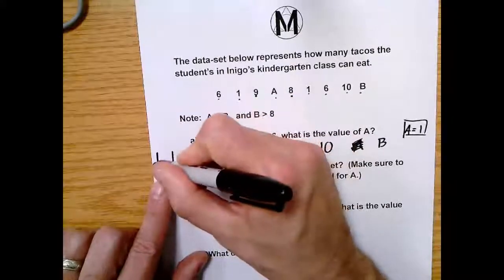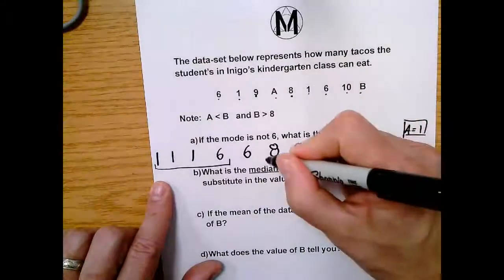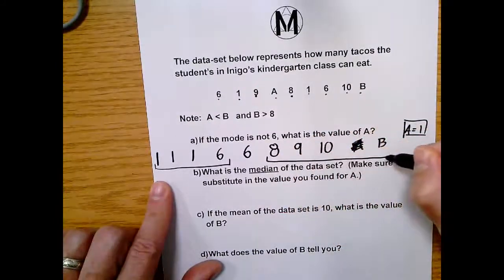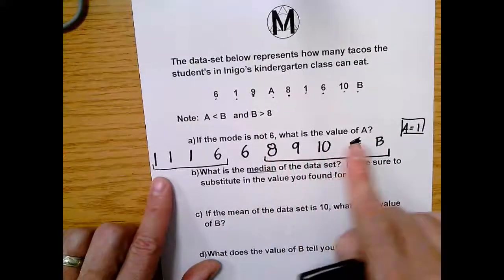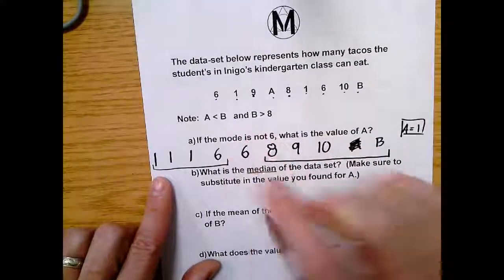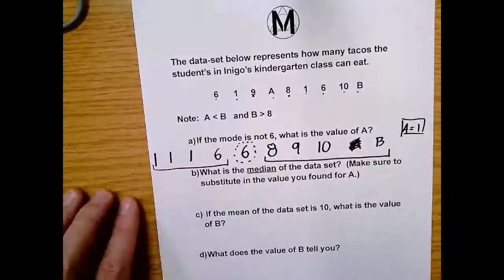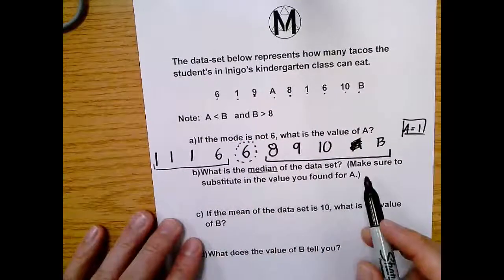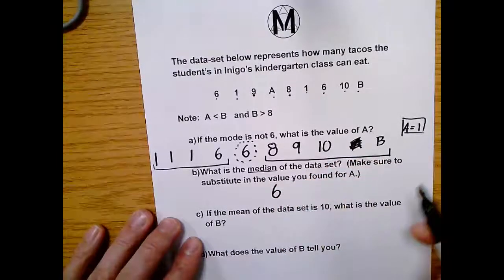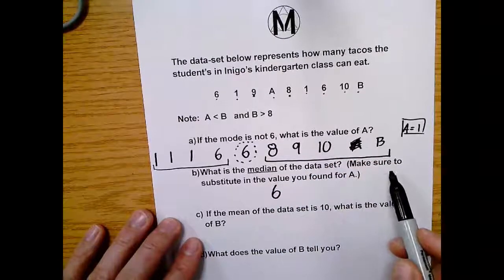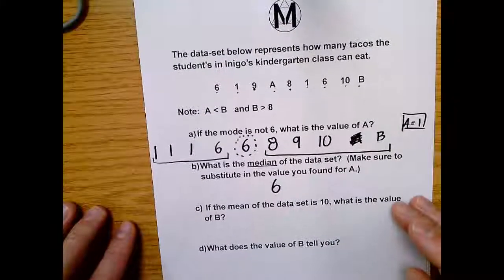So watch this. One, two, three, four. So like this is the first four. And then one, two, three, four. Ignore the scribbled out A. That's gone now. That's the one now. So we have one, two, three, four, eight, nine, ten, and B. And the number left in the middle, that is our median. So what is the median of the data set? Well, that is six. And this note here just reminded you, make sure you substitute in the value you found for A. That's why I put the one there. Okay, let's keep it going.